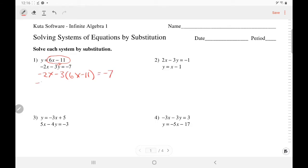Now negative 2x is alone, but you take this negative 3 and distribute it. Remember the negative belongs to the 3. Negative 3 times 6 is negative 18x. Negative 3 times negative 11 is positive 33 equals negative 7. Add like terms.